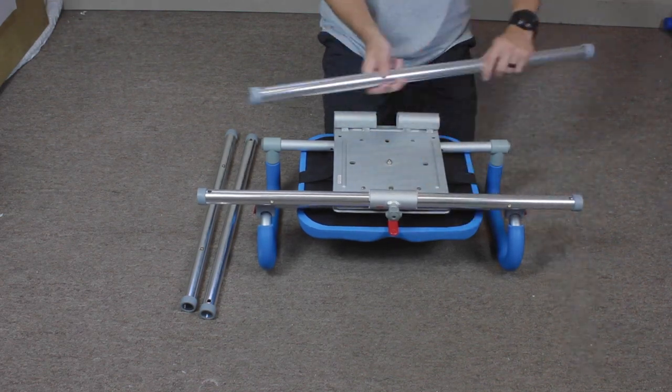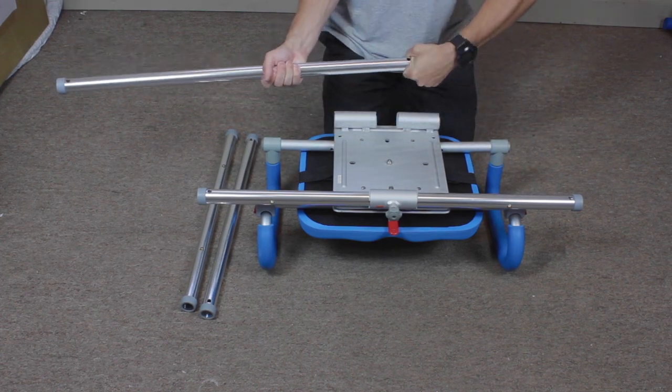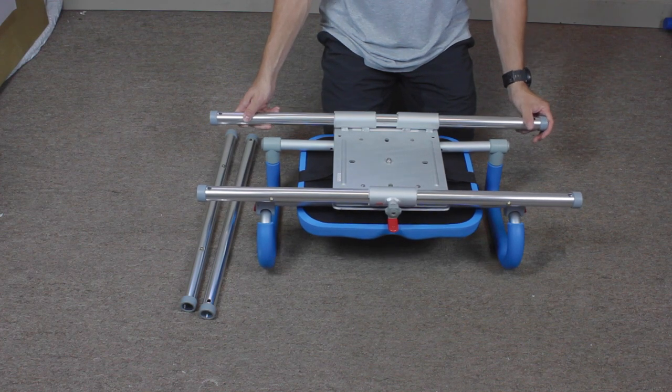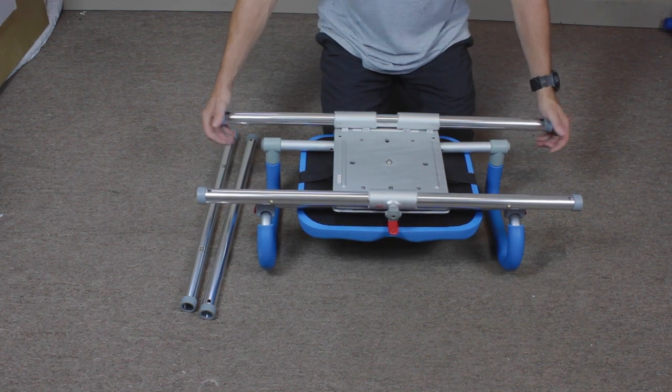Do the same for the rear rail. Replace the end cap and you are ready to assemble the rest of the chair.